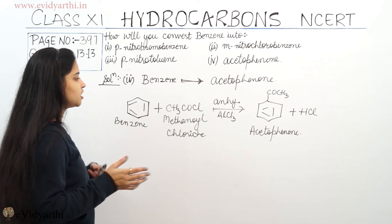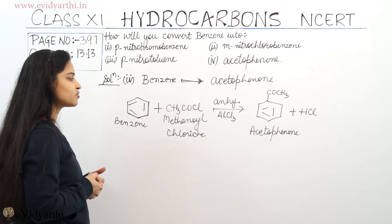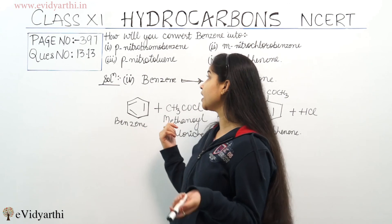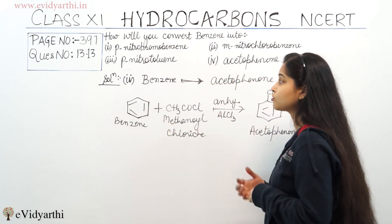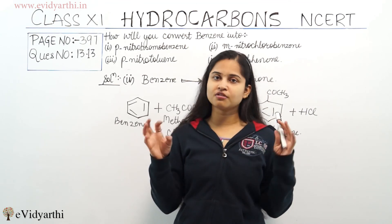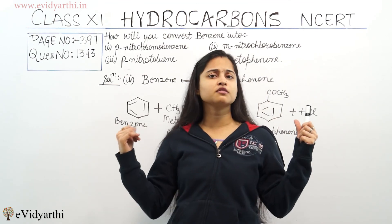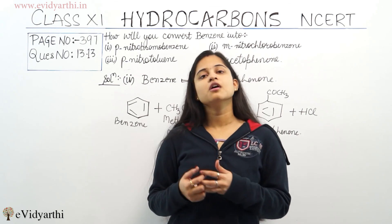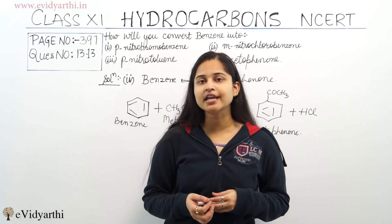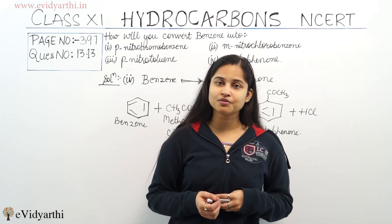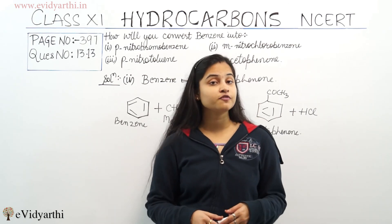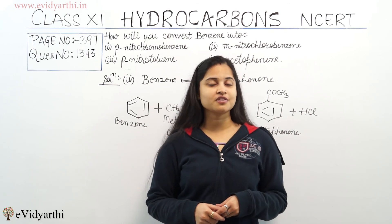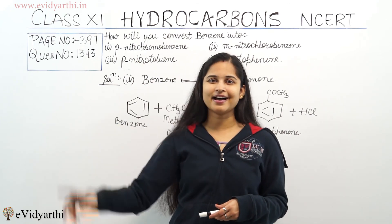This is how the conversion of benzene into acetophenone takes place by acylation. I hope these four conversions — benzene into para-nitro-bromo-benzene, meta-nitro-chloro-benzene, para-nitro-toluene, and acetophenone — are clear. If you have any doubts, write them below. Don't forget to watch the next video and subscribe. Bye!